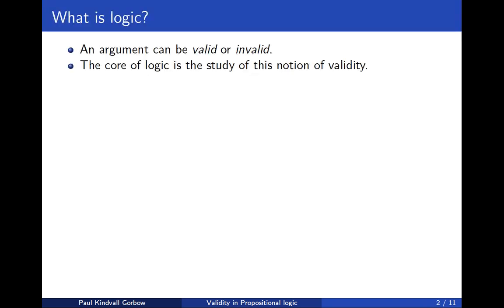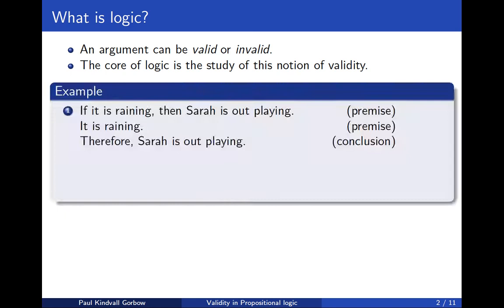So what is logic? At its core, logic is about the notion of validity. You can say that an argument is valid or invalid. For example, we have this argument that if it is raining, then Sarah is out playing — as the first premise — and it is raining as the second premise. And then we have the conclusion that Sarah is out playing. This is a valid argument.